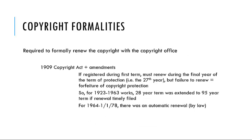The third copyright formality, which was already alluded to, is the need to formally renew the copyright with the Copyright Office. Under the 1909 Copyright Act and its amendments, if the copyright was registered during the first term, you must renew during the final year of the term of protection — in other words, the 27th year. A failure to renew meant you forfeited the copyright protection. So for 1923 to 1963 works, the 28-year term was extended to 95 years if the renewal was timely filed. For 1964 through January 1st of 1978 works, there was an automatic renewal by law.